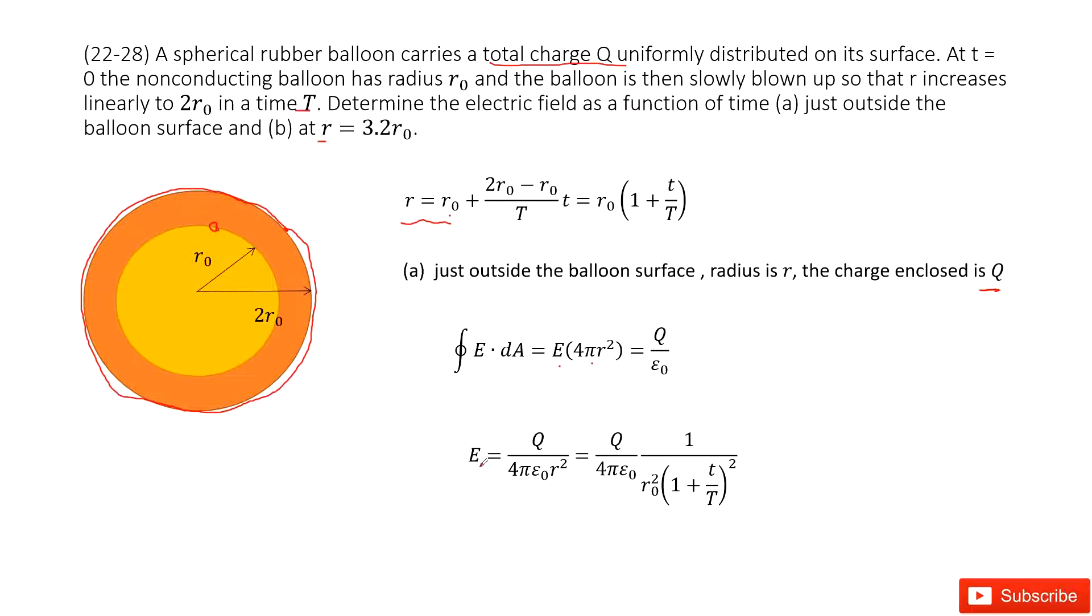So in this case, we write the function for E as Q divided by 4π epsilon naught R squared. And then replace R by this term. So then you input this R inside. You get the answer.